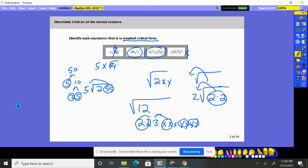Our answers are the two in the middle. Those are in simplest radical form because nothing can be pulled out of the square root.